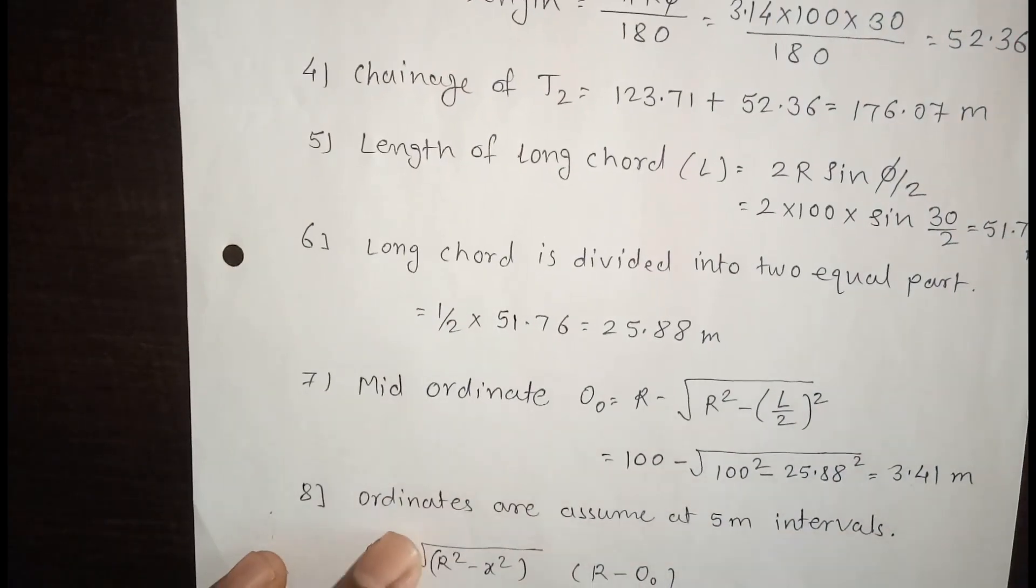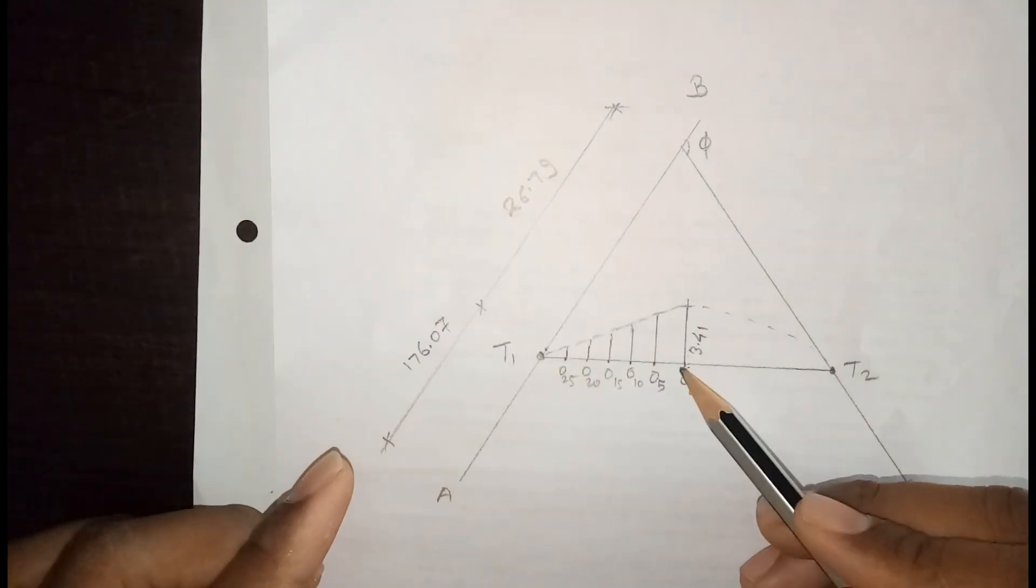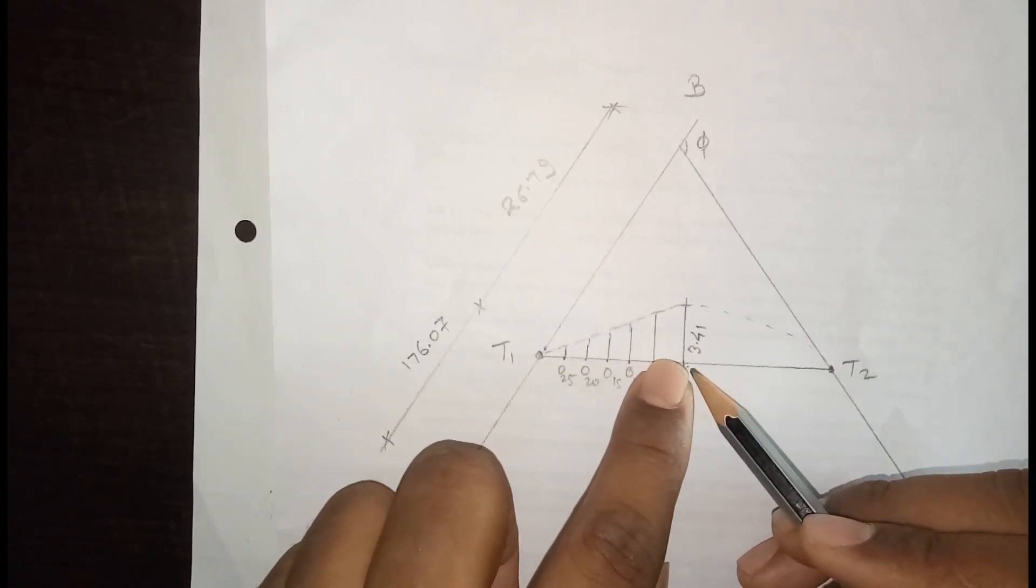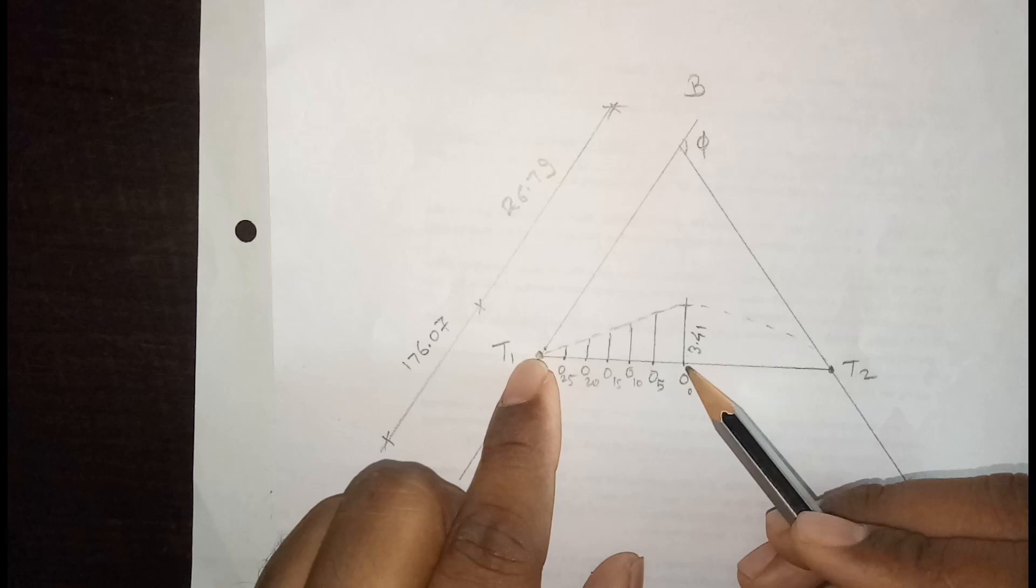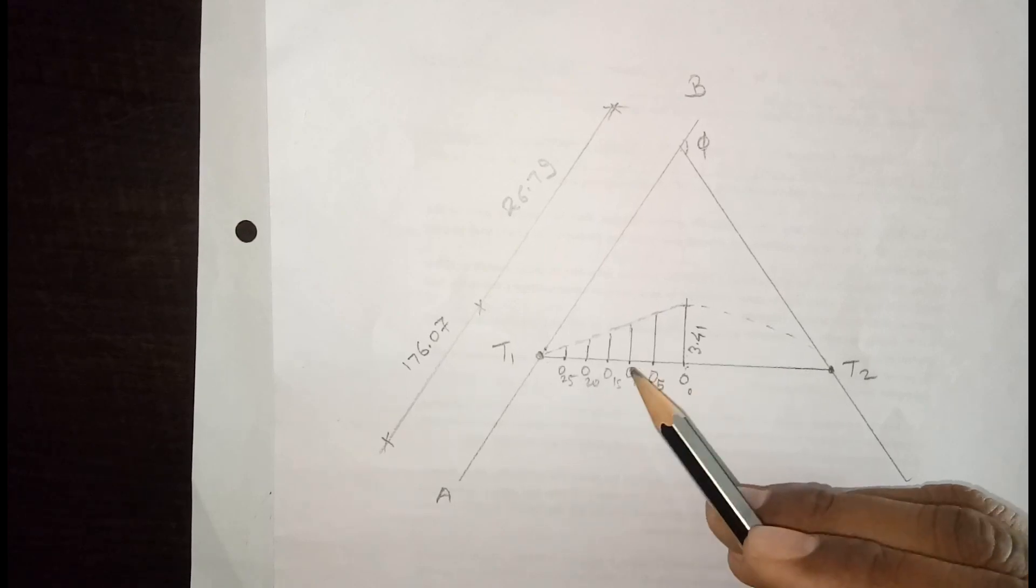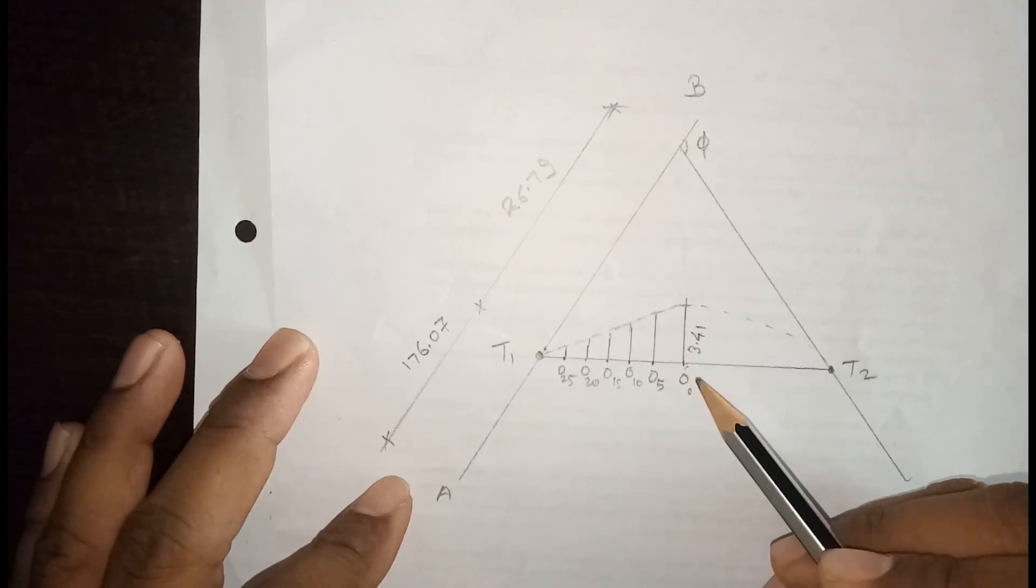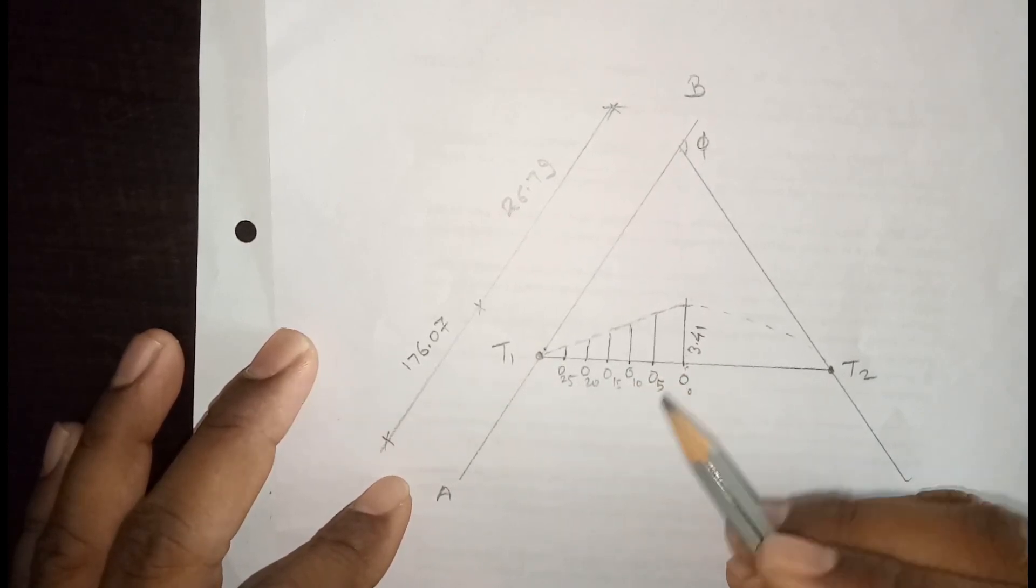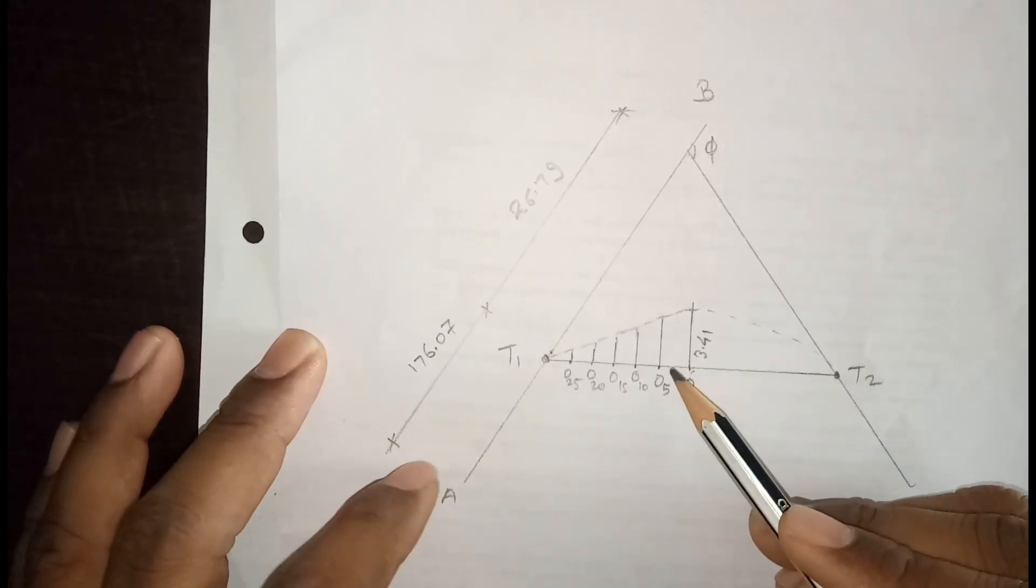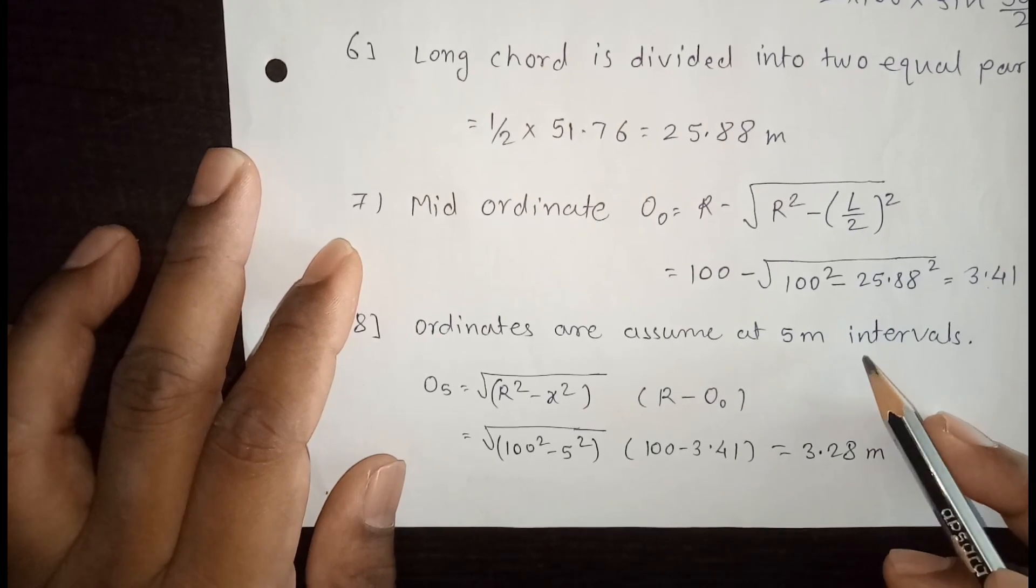Now see here. This total distance is 25.88. Now we have to make equal part in this distance. We have to make equal parts on this area. So 25.88, at least minimum 5 to 6 equal part we have to make. At least 5 to 6 equal part we have to make. So assume 5 meter. You can assume 4 meter, you can assume 3 meter. So I am assuming 5 meter equal part.